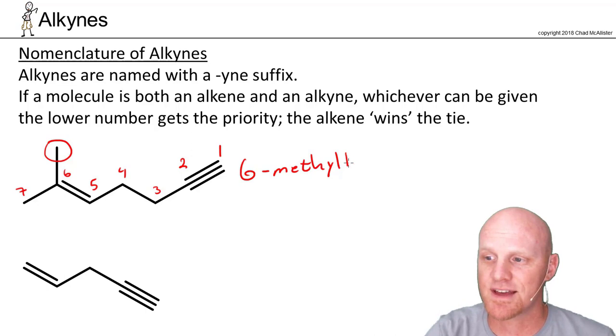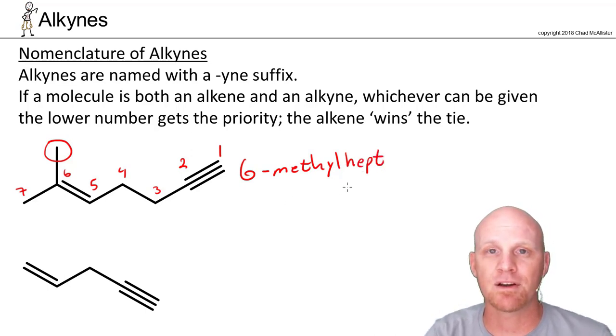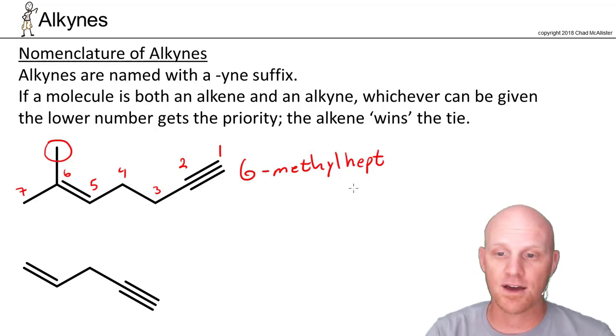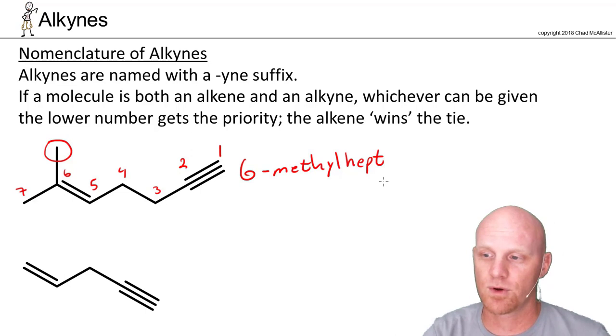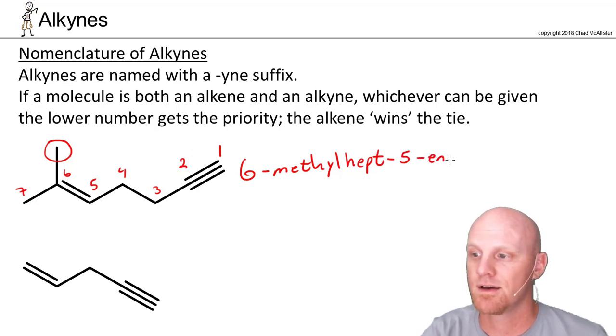Seven carbons is hept. With two major functional groups showing up in the parent chain, your chain locators have to be in the middle of the parent chain's name. You can't stick them at the front before hept. It doesn't work when you have two functional groups. So in this case, we'll say hept-5-ene. We name the ene before the yne, it turns out, and then dash 1-yne.